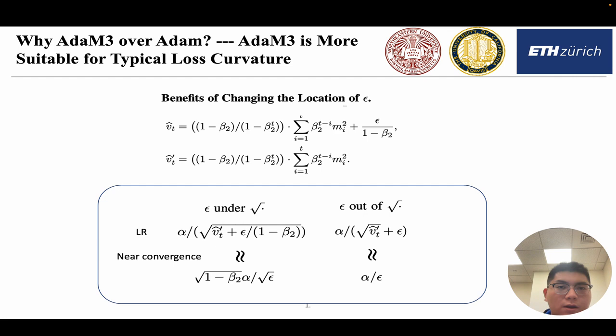And beta_2 is a very large number close to 1. So we can conclude that the effective learning rate of AdaM3 is much smaller than the effective learning rate of Adam, which is beneficial to the stability of training.